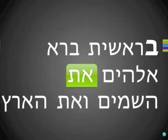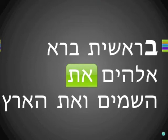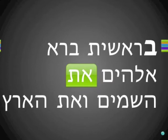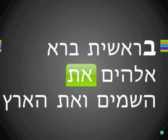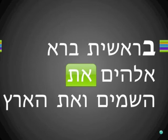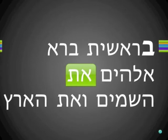So here goes. First off I want to put up some Hebrew. This is Genesis 1:1. Remember the Hebrew reads from right to left — that's Bereshit, Berah, Elohim, Et, HaShemayim, Vayet, Haaretz — In the beginning God created the heavens and the earth.